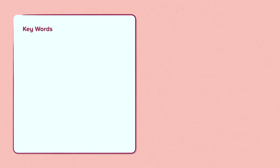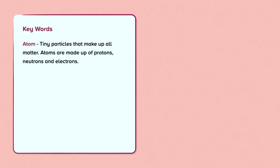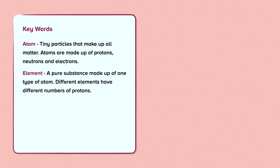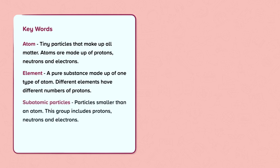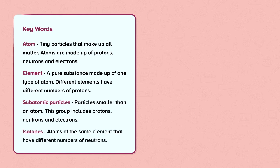Keywords. Atom: tiny particles that make up all matter; atoms are made up of protons, neutrons and electrons. Element: a pure substance made up of one type of atom; different elements have different numbers of protons. Subatomic particles: particles smaller than an atom; this group includes protons, neutrons and electrons. Isotopes: atoms of the same element that have different numbers of neutrons.